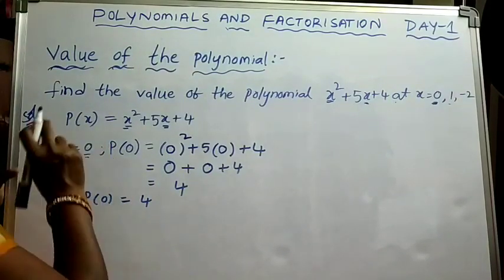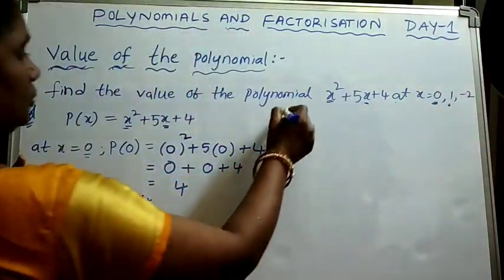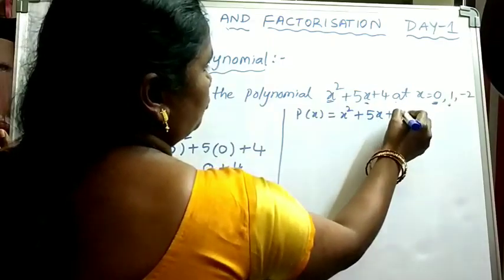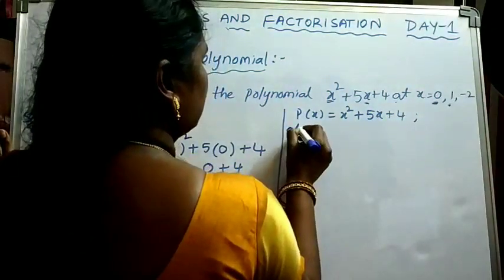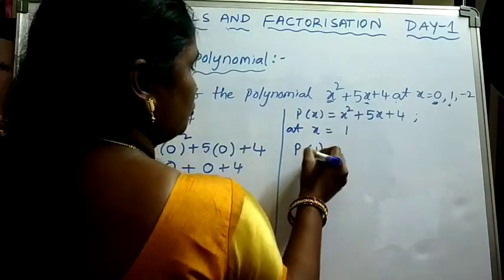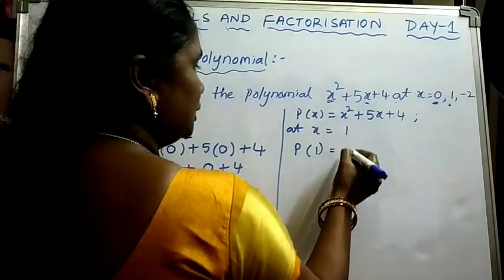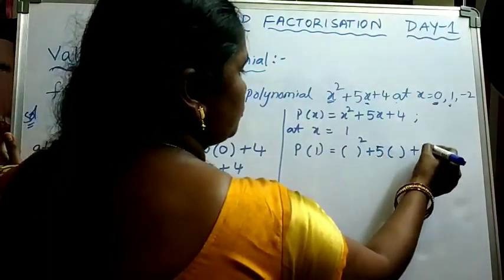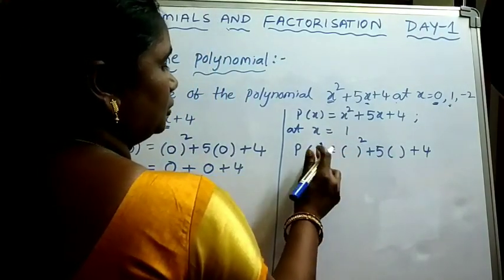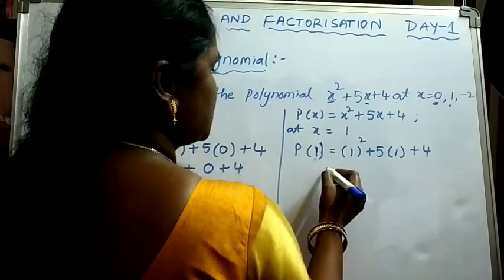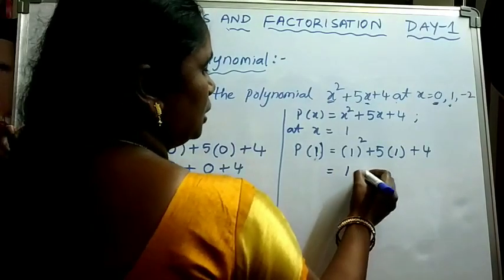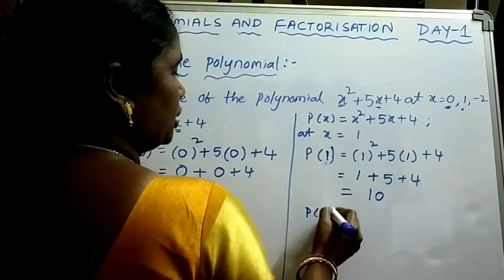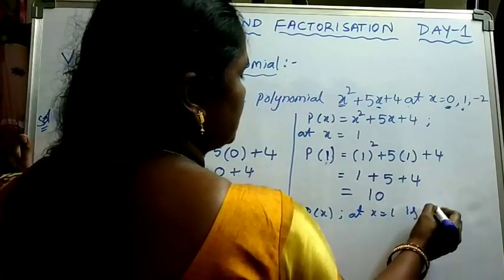Now we find the value at x = 1. P(1) = 1² plus 5·1 plus 4 = 1 plus 5 plus 4 = 10. So the value of the polynomial P(x) = x² plus 5x plus 4 at x = 1 is 10.